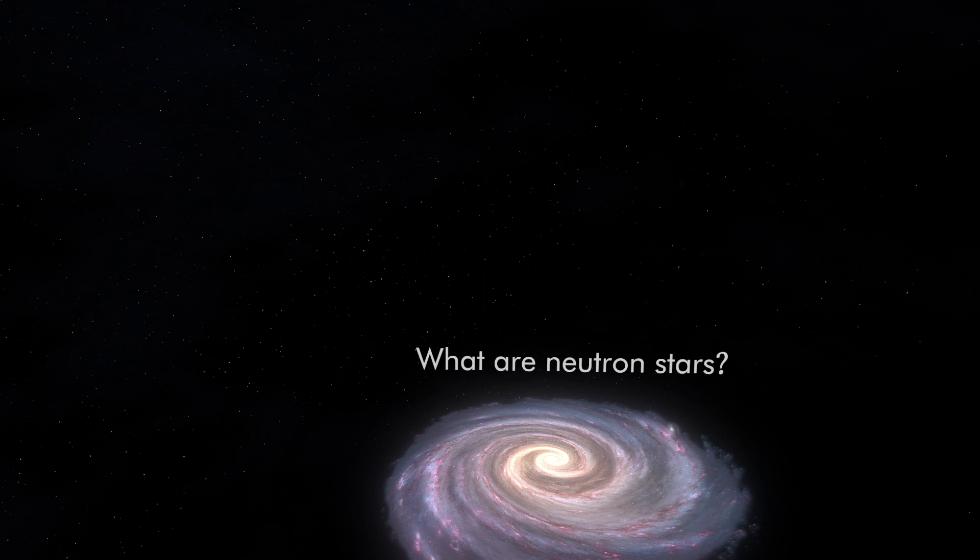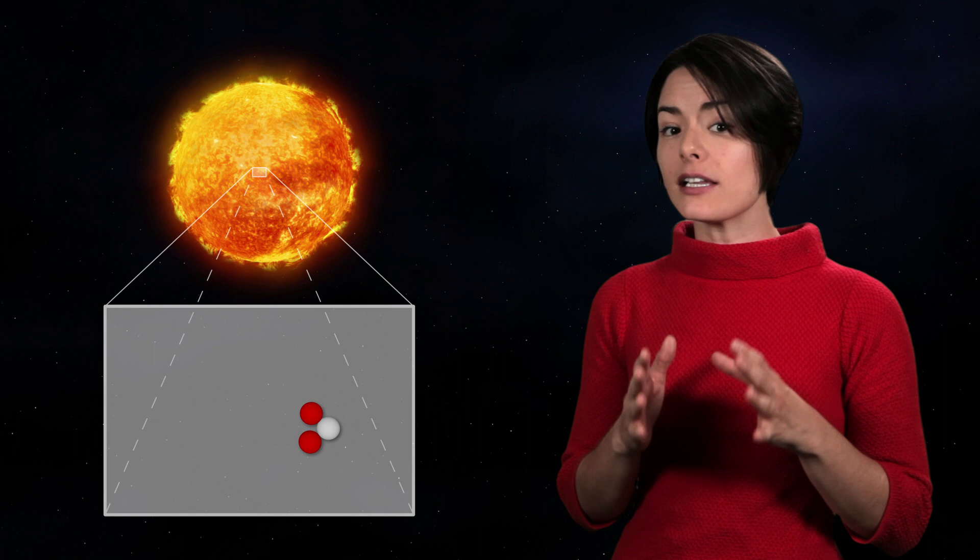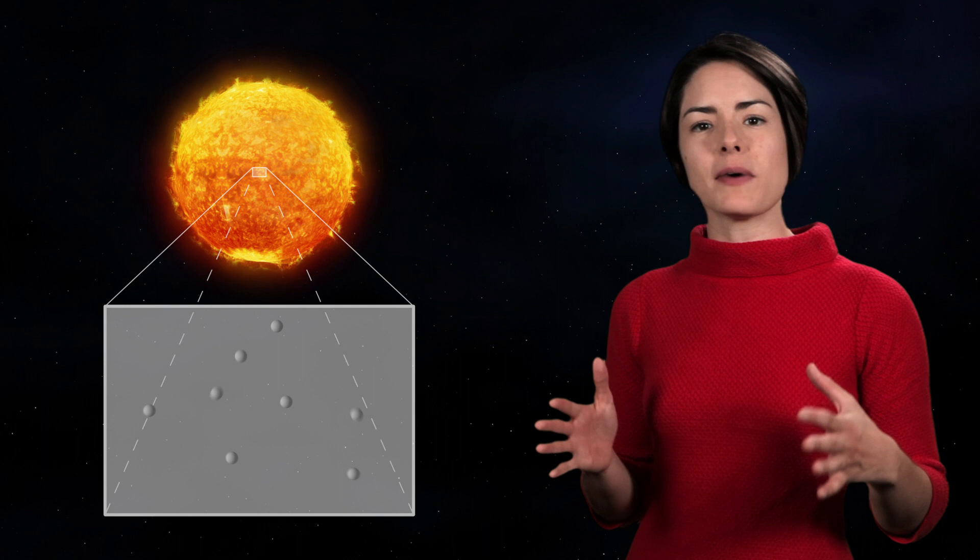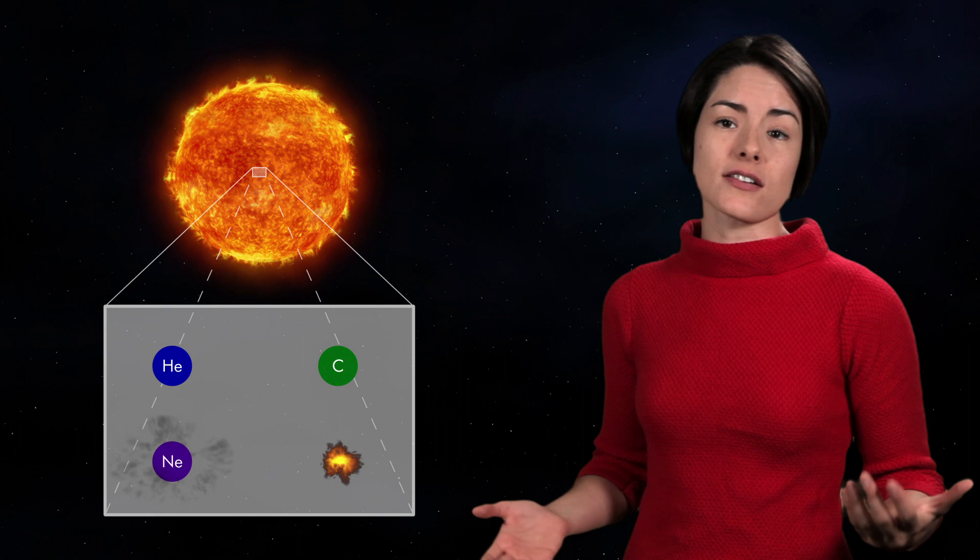Stars spend their lives fusing matter together. This process begins with the simplest of atoms, hydrogen. Fusing hydrogen nuclei gives you helium and releases some energy. It's this energy which causes the stars to shine. If the star is big enough, then it continues to evolve by fusing matter together to make heavier elements: helium, carbon, neon, oxygen.